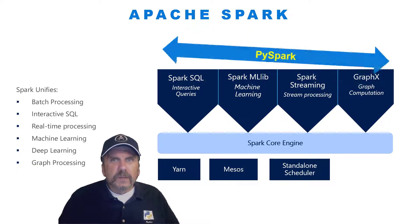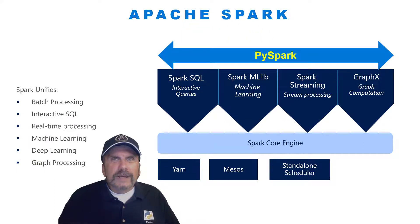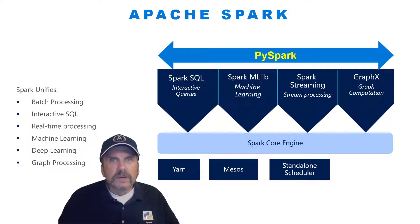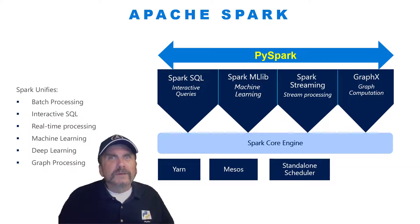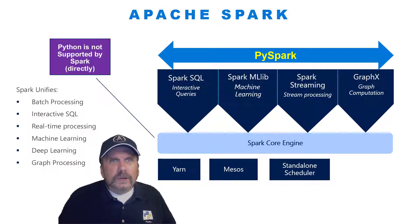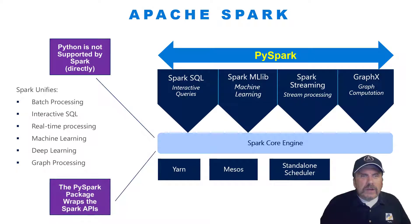So how does Python fit into this? The first thing you need to ask yourself when you look at a non-native language to Spark, like Python or R, is how much of the various APIs within Spark are accessible to this language? The good news is PySpark pretty much covers everything I've seen. Python is not supported by the core engine, which means it's not really supported natively by Spark. But PySpark is a wrapper that wraps itself around the Spark APIs, creating an interface between your Python code and Spark. You don't have to worry about how it does that — you just get in and start coding Python.